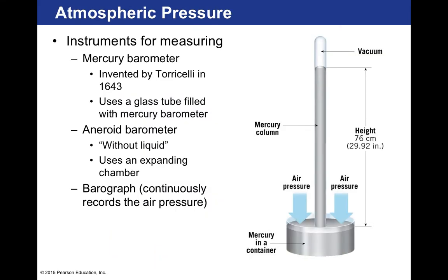Some instruments for measuring air pressure: the first barometer — a pressure measuring device — was invented by Torricelli in 1643 and uses a glass tube filled with mercury. This literally measured the height of a mercury column in a vacuum. There's another type called an aneroid barometer, which uses no liquid — just an expanding air chamber. The last type is a barograph, which continuously records air pressure, similar to how a seismograph continuously records earthquake waves.